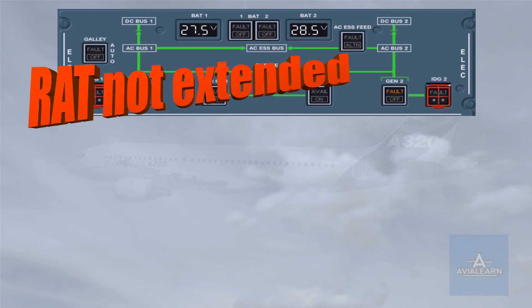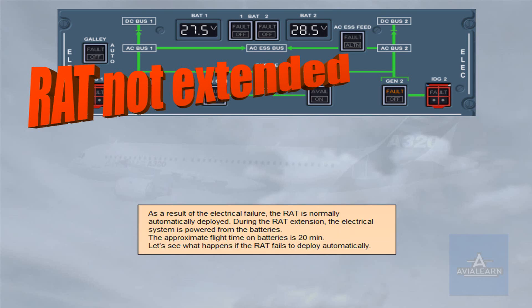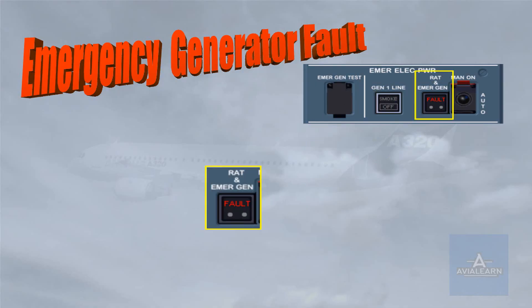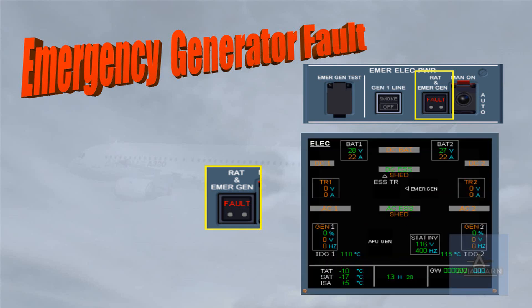Let's see what happens if the RAT fails to deploy automatically. If the RAT fails to extend, a specific line appears in the emergency electrical procedure, telling you to manually extend the RAT on the emergency electrical power panel — this will be done for you. After a RAT extension, if the emergency generator is not working, the red fault light stays illuminated on the RAT and emergency generator indicator. This failure causes the aircraft to be powered only from the batteries.